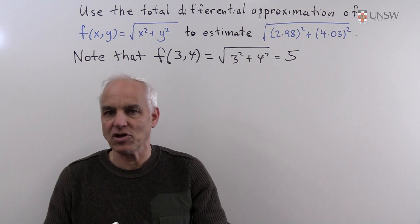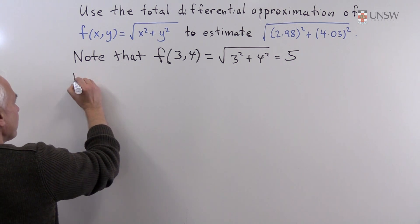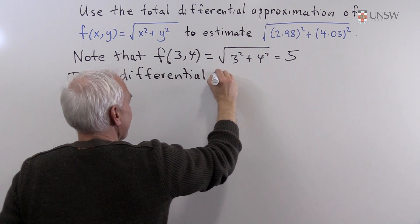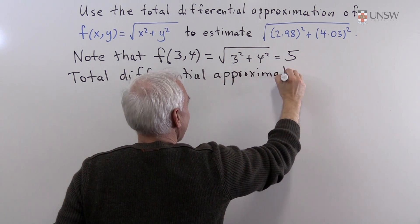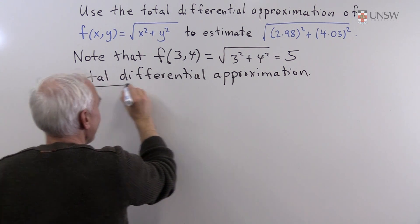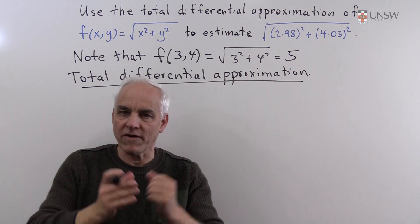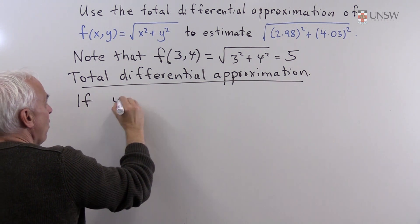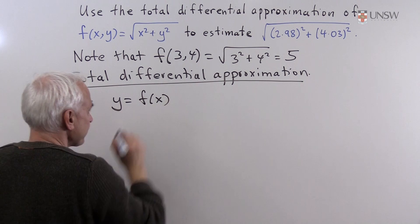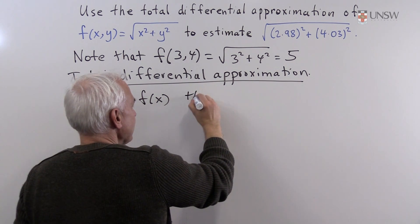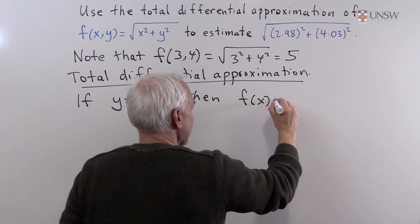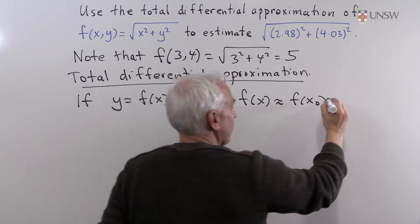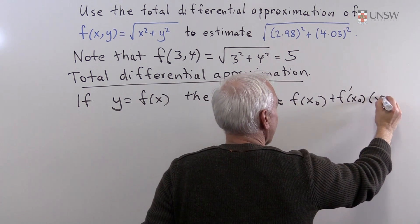So what is the total differential approximation? To motivate this, let's look at the one-dimensional case. If y = f(x) is a function of one variable, then we can write that f(x) is approximately f(x₀) plus f′(x₀) times (x − x₀).